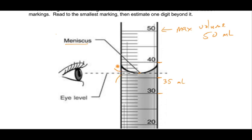Let's mark off the two lines — this would be 36, and this top one is 37 milliliters. It looks like the meniscus is either right in the middle or just a little bit above the middle between the two marks. That means we can actually estimate the next digit — that would be the tenths position, the estimated digit.